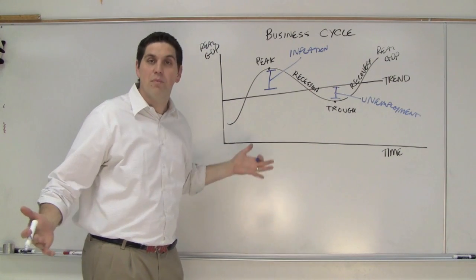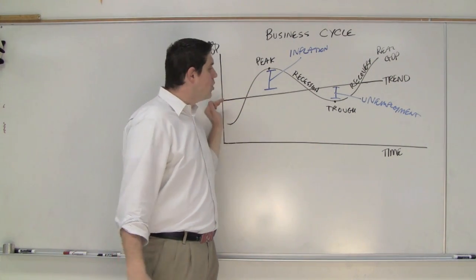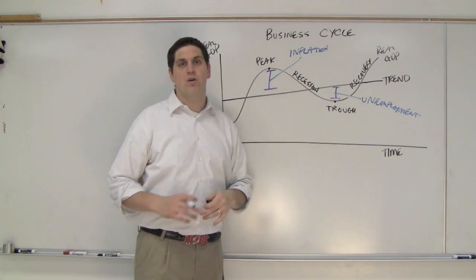Unemployment is any time we're below this trend line. This trend line is full employment, right? That line right there shows you we have full employment over time and we want it going up. That's GDP growth.